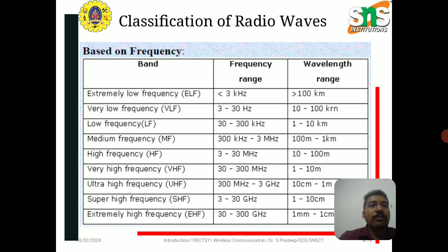The classifications of radio waves are given as tabulations in this slide. The different types include extremely low frequency, very low frequency, low frequency, medium frequency, high frequency, very high frequency, ultra high frequency, super high frequency, and extremely high frequency. The frequency ranges from less than 3 kilohertz to 300 gigahertz.